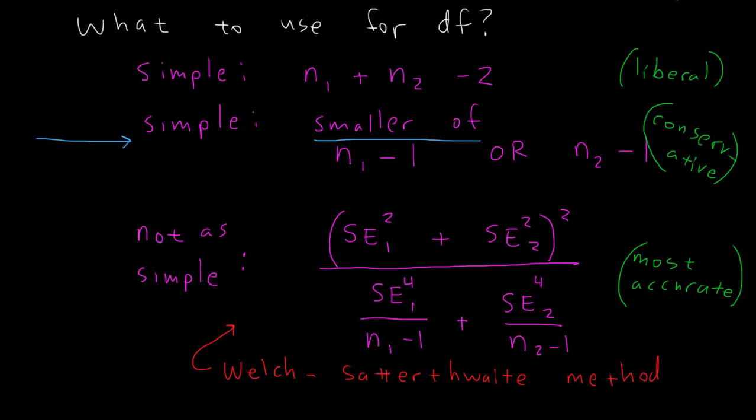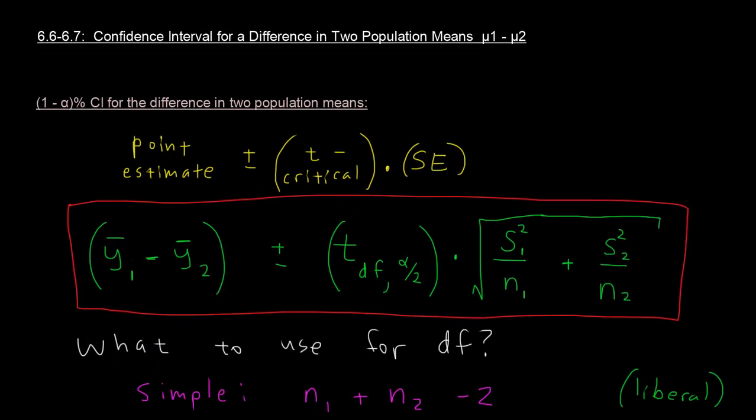So for this video, I just wanted to highlight the formula that we're going to use and what degrees of freedom we're going to use in this formula. So this is a confidence interval for the difference in two means. And in the next video, we will look at a particular example.